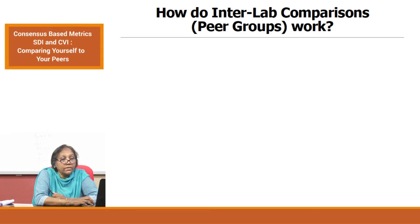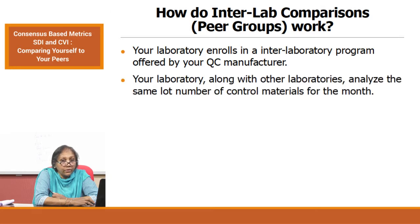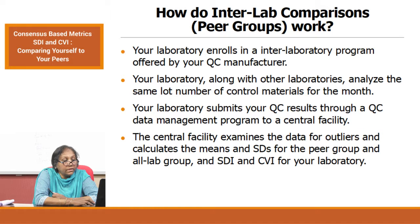How do inter-lab comparison peer groups work? Your laboratory enrolls in the inter-laboratory program offered by your QC manufacturer. Your laboratory, along with other laboratories, analyzes the same lot number of control materials for a month. Your laboratory submits your QC results through the QC data management program to a central facility. The central facility examines the data for outliers and calculates the means and standard deviation for the peer group and all lab groups.